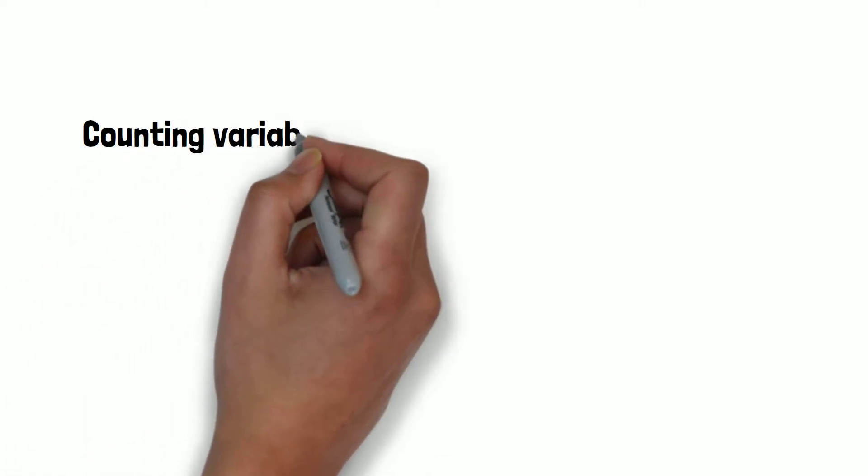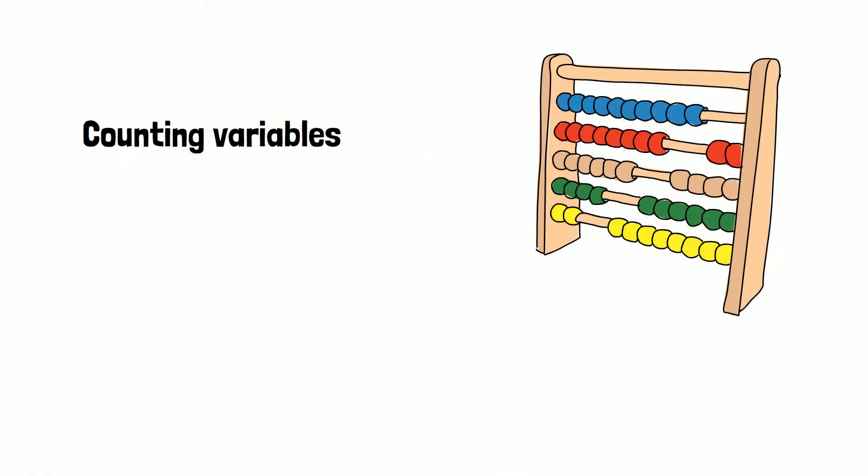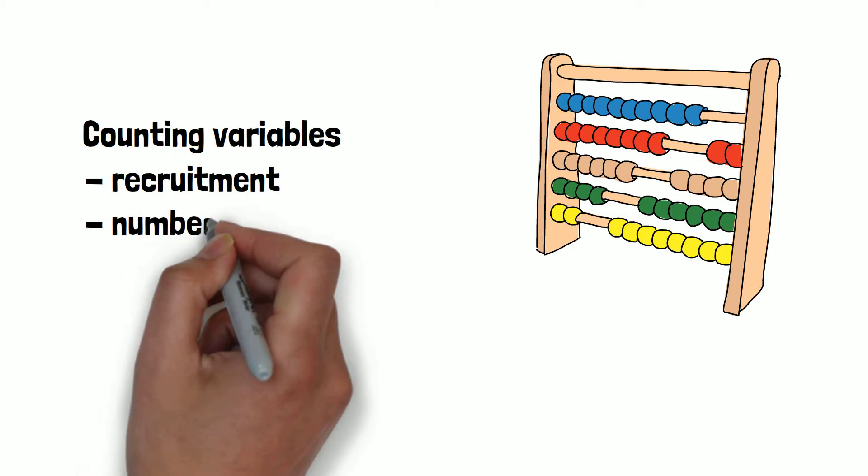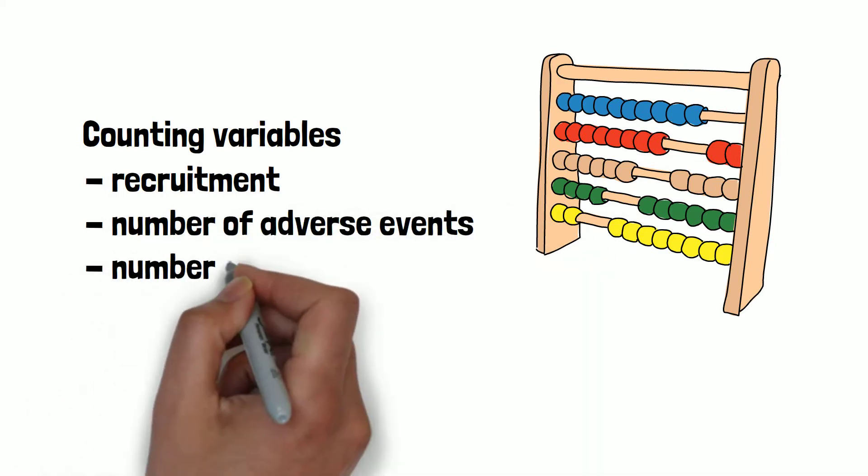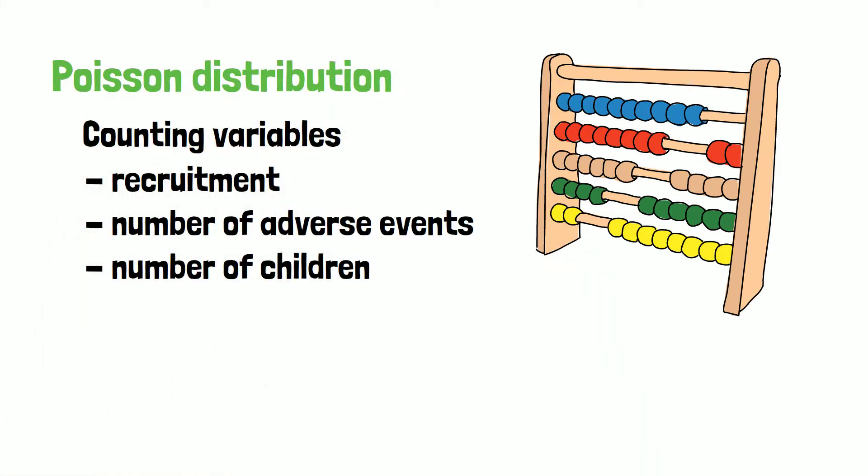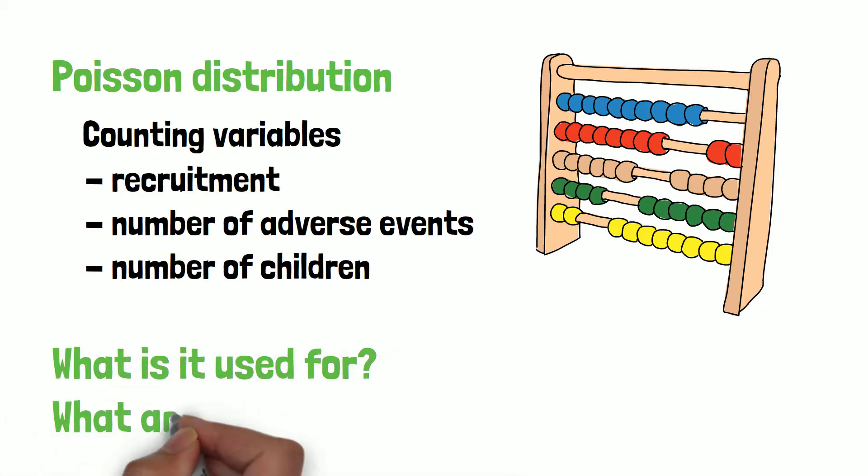Counting variables such as the recruitment for a clinical study, the number of adverse events, or the number of children in a family can be estimated based on the Poisson distribution. In today's video we want to discuss what the Poisson distribution is used for and what the advantages of it are.